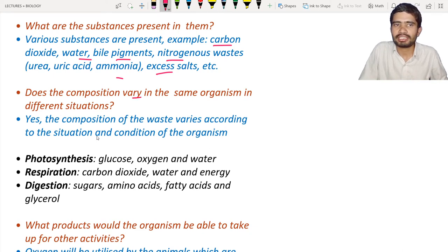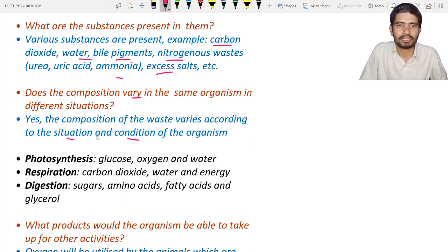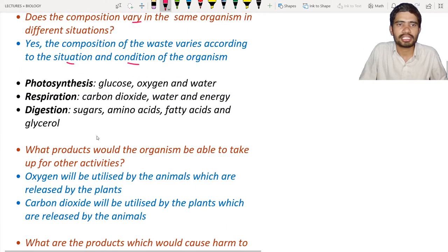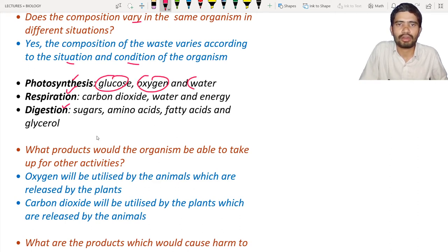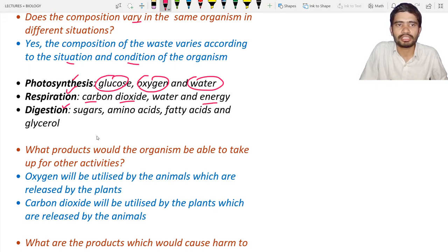The composition of waste varies depending on the condition and situation of the organism. A table in the textbook asks about end products of various processes: photosynthesis produces glucose, oxygen, and water; respiration produces carbon dioxide, water, and energy; digestion includes sugars such as glucose and fructose.